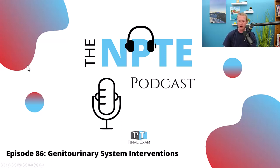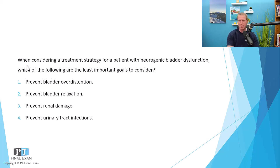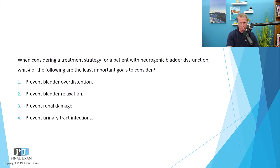So without further ado, we're going to talk through our practice question. I'll read through the question, give you a moment to consider the answer, and then we'll talk about it together. When considering a treatment strategy for a patient with neurogenic bladder dysfunction, which of the following are the least important goals to consider?